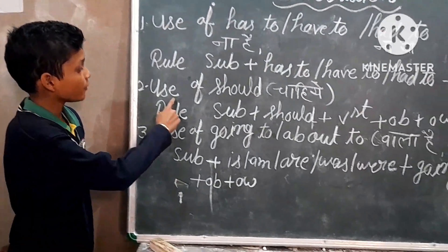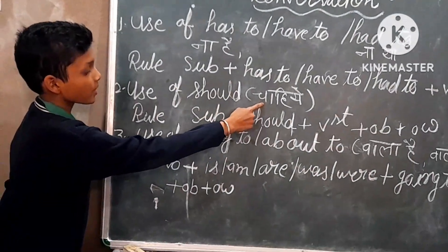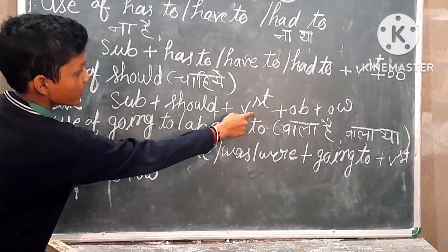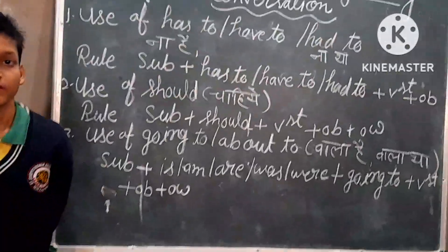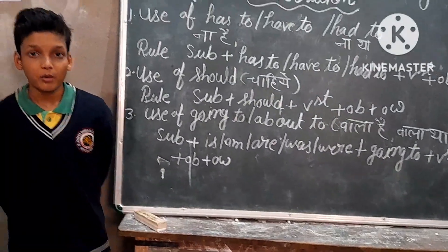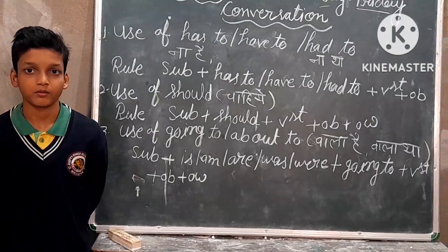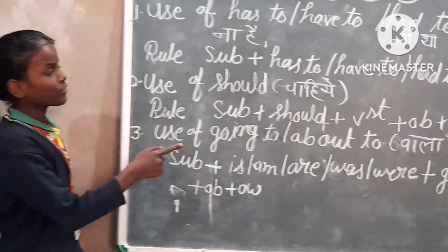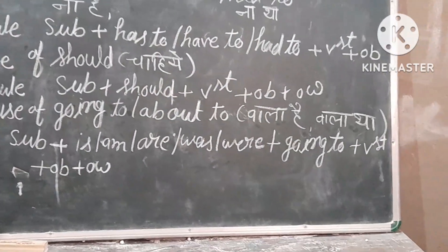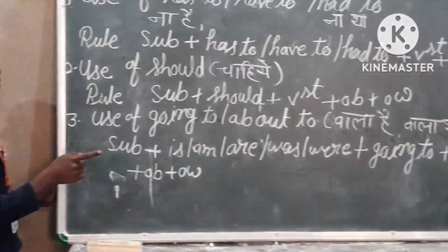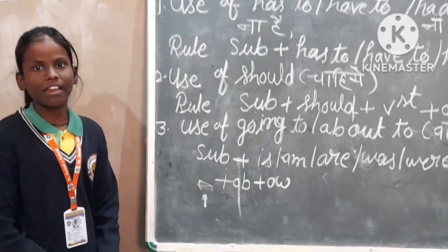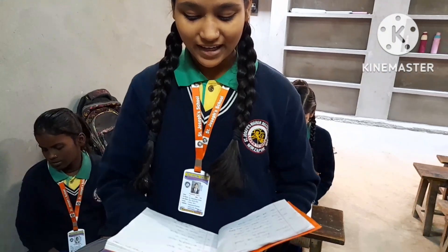Now the second use — 'should' and 'going to.' The structure is: subject plus should plus verb first form, plus object or other words. Example: 'I am going to cook food.' Another example: 'Mujhe bolna hai' means 'I have to speak.'